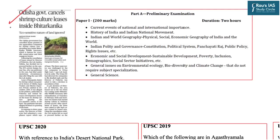Now this topic appeared at page number 7. The topic reads: 'Odisha government cancels the shrimp culture leases inside Bhitarkanika.' This topic is mainly relevant from the preliminary examination's perspective because the syllabus mentions general issues on environment, ecology, biodiversity, and climate change. In this news article, an important wildlife sanctuary and national park — Bhitarkanika — is mentioned.